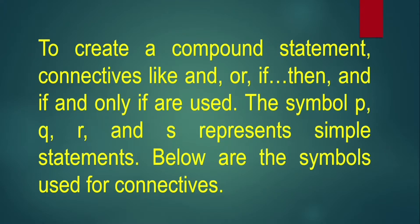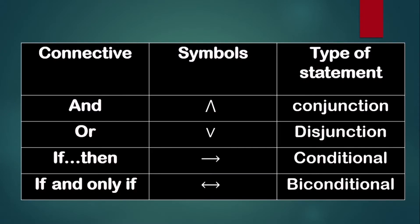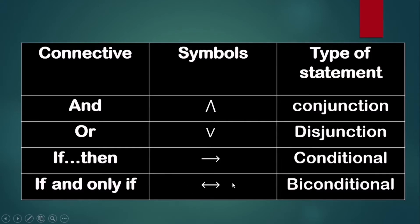I will show you the symbols used for connectives in mathematics. If we have the connective AND, we use the conjunction symbol, and the type of statement is conjunction. If we have OR, we use the disjunction symbol, and the type of statement is disjunction. If we have IF-THEN, we use the conditional symbol, and the type of statement is conditional. If we have IF AND ONLY IF, we use the biconditional symbol, and the type of statement is biconditional.